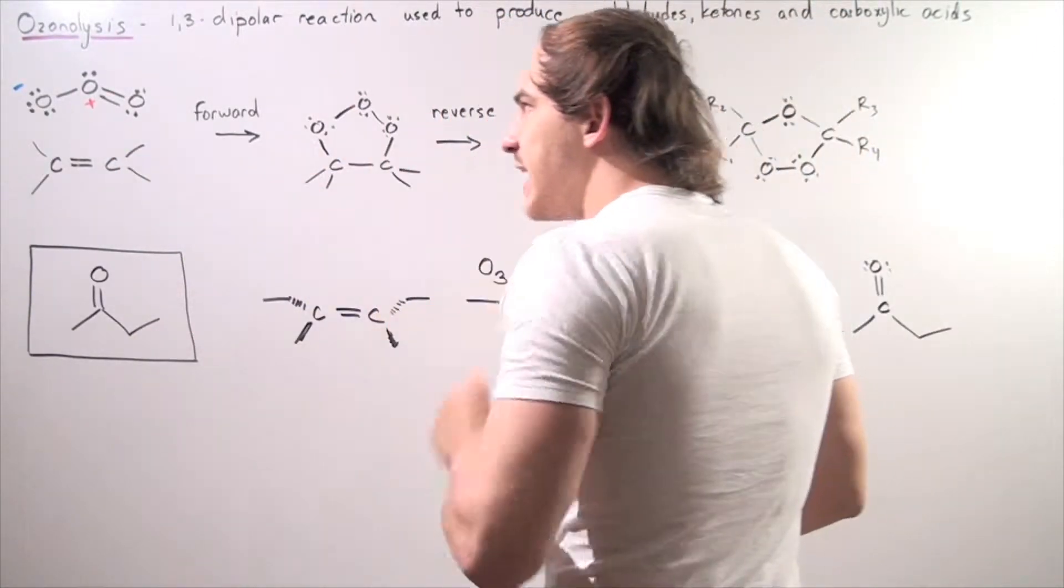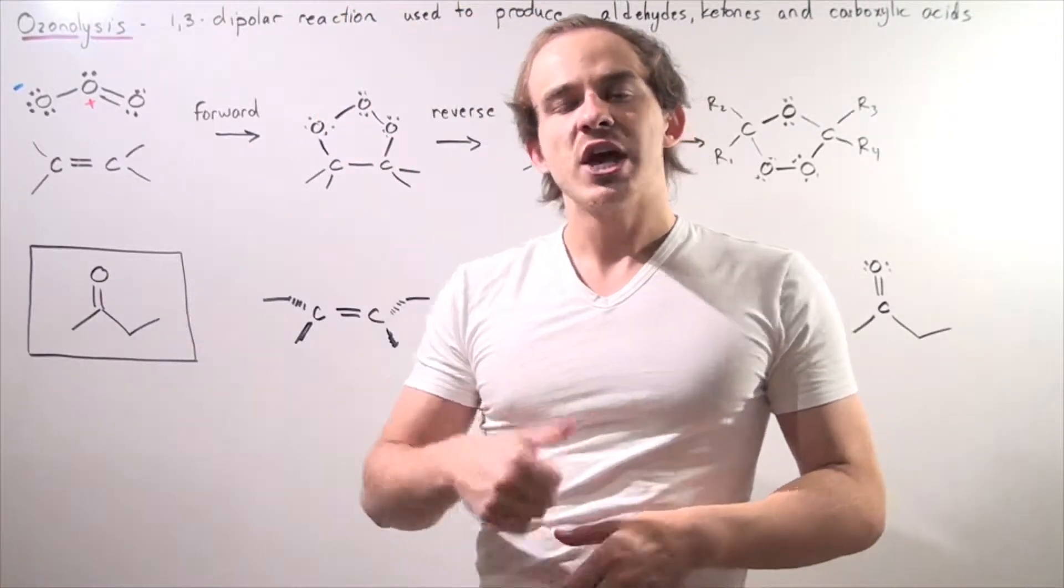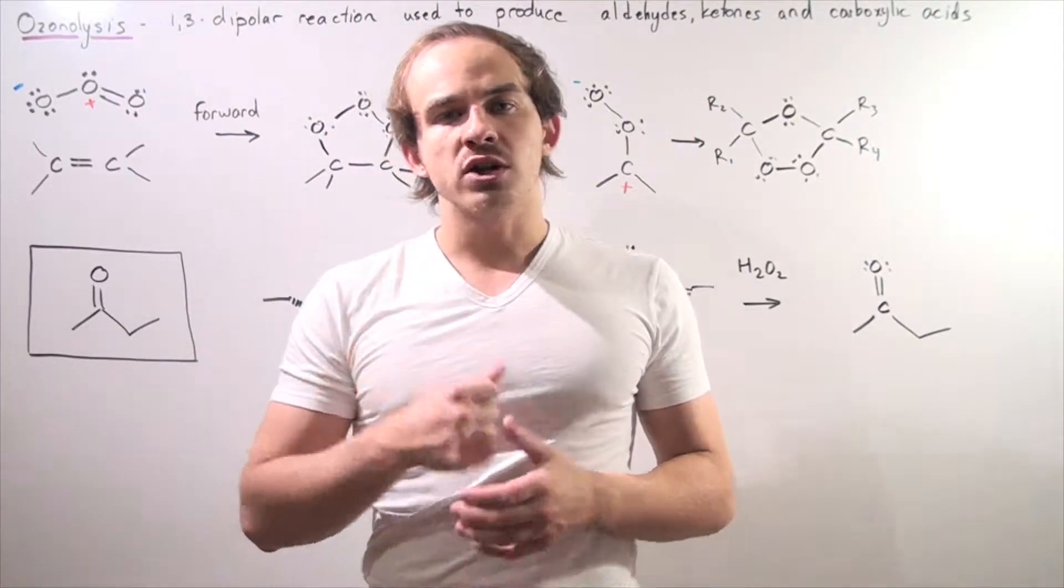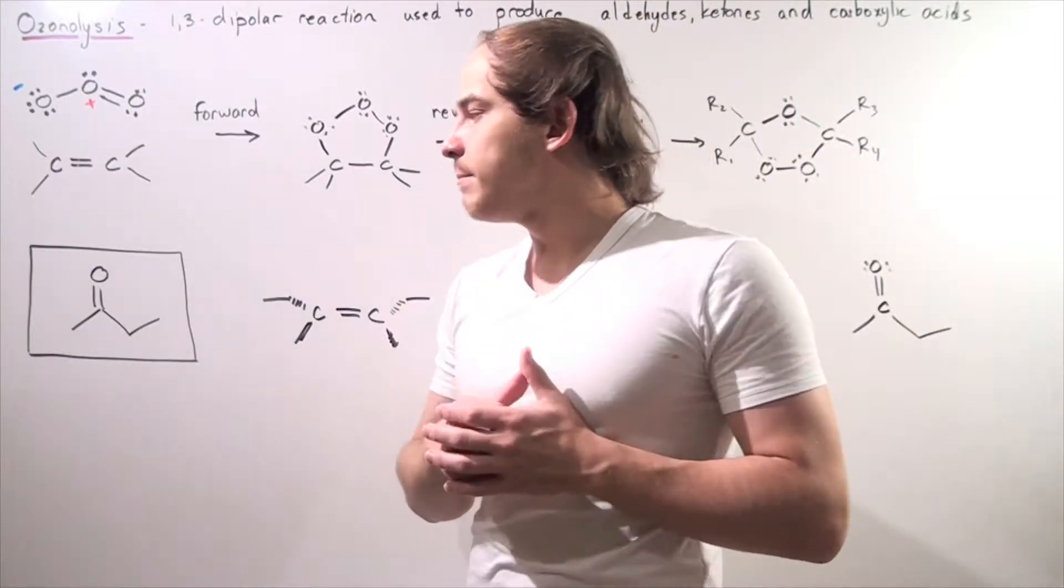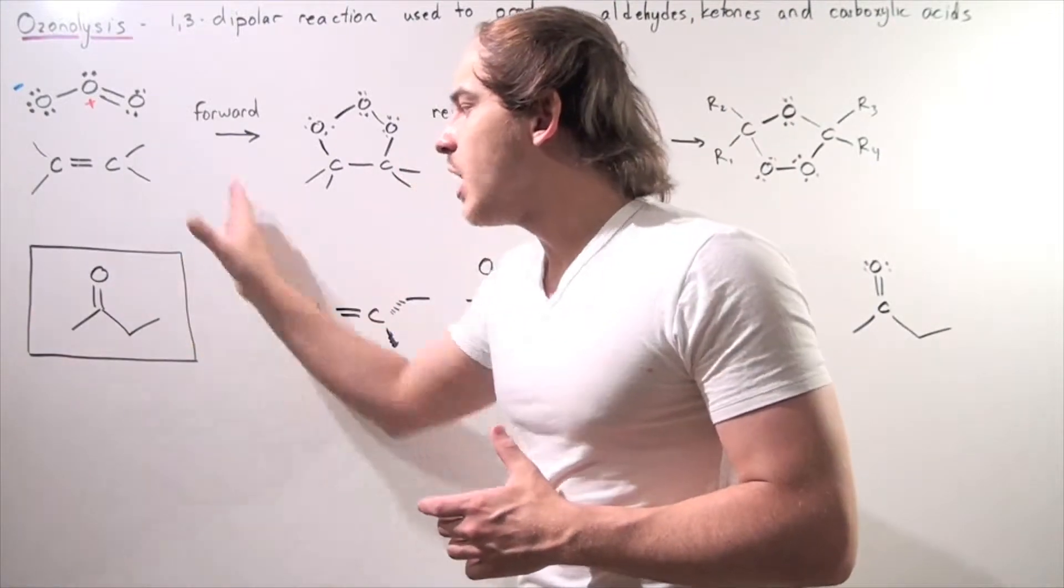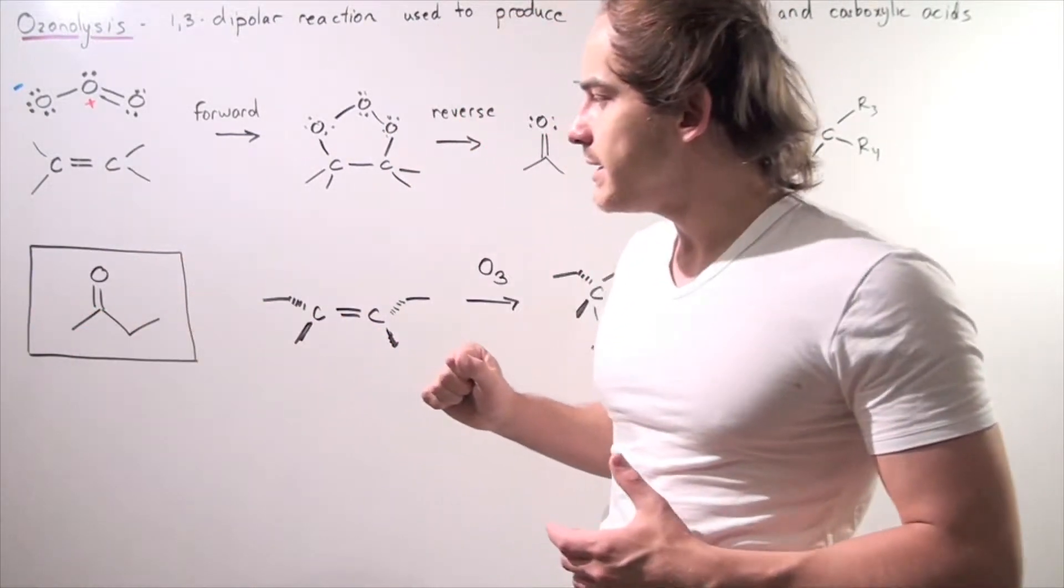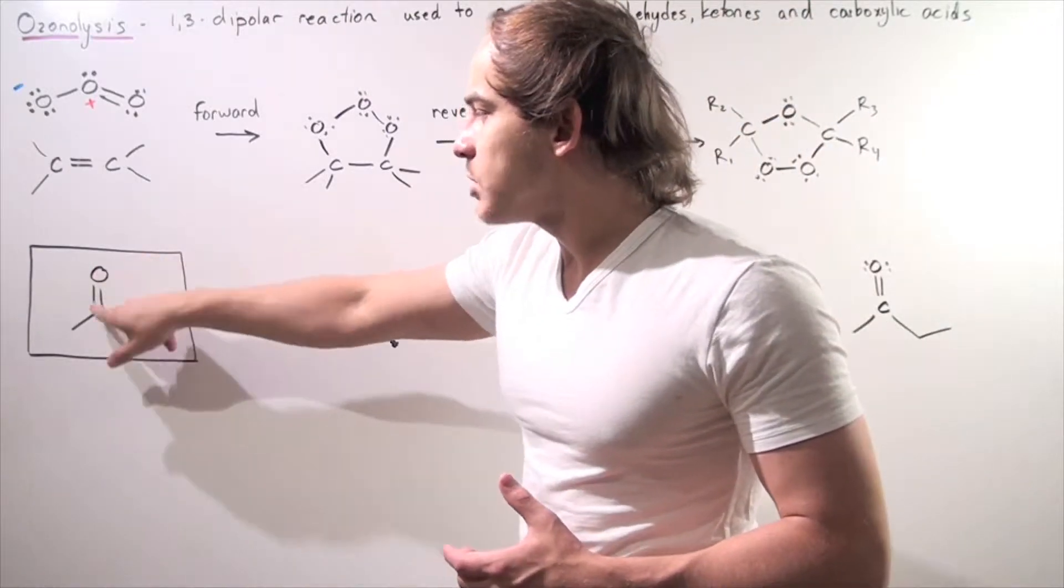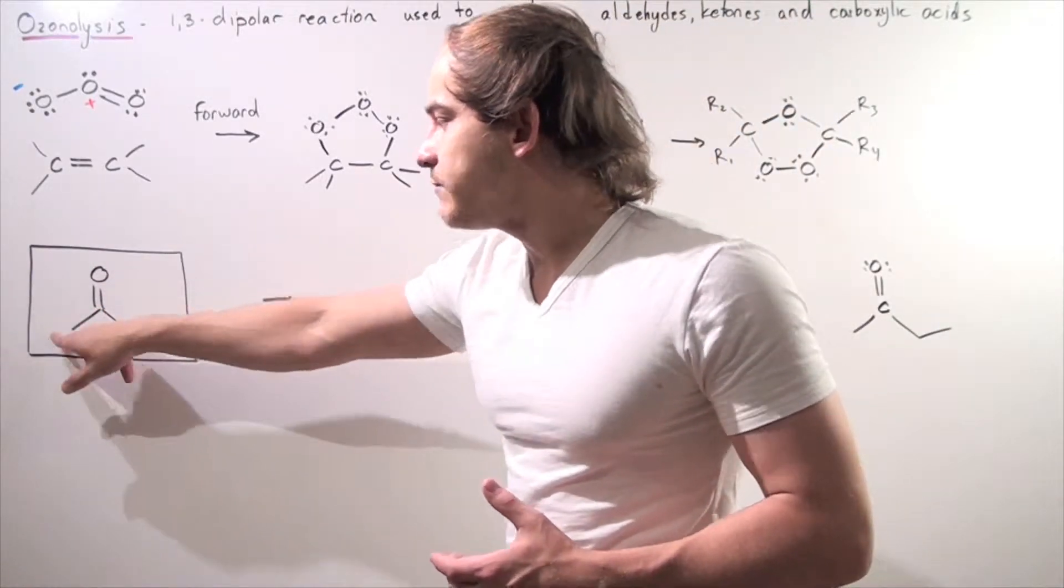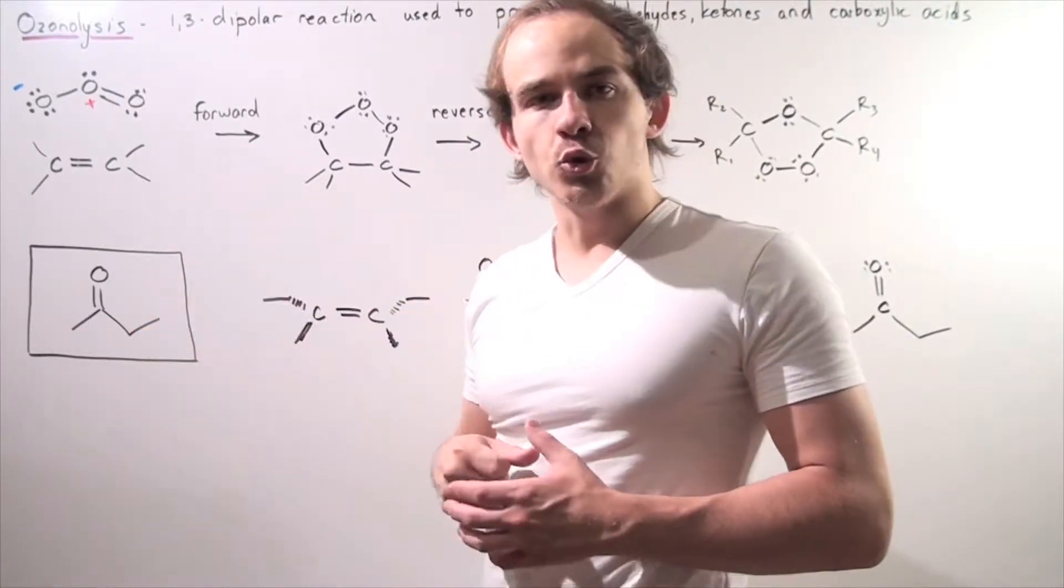Ozonolysis is useful because it allows us to produce ketones, aldehydes, or carboxylic acids. As an example, let's suppose we want to produce the following product. This happens to be a ketone because we have the carbonyl group and we have two side chains: a methyl and an ethyl group.